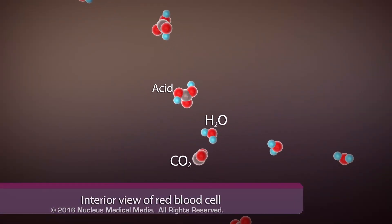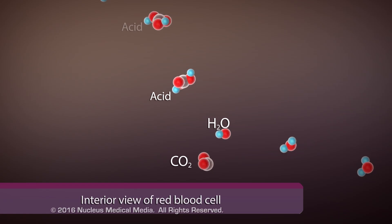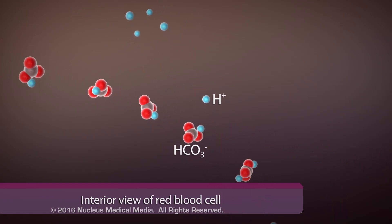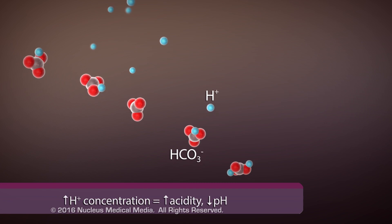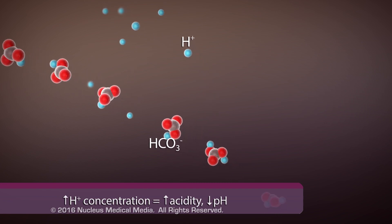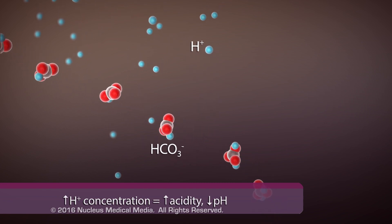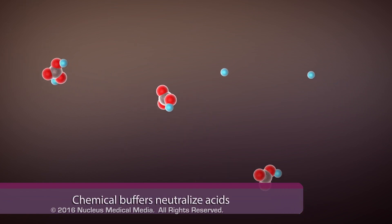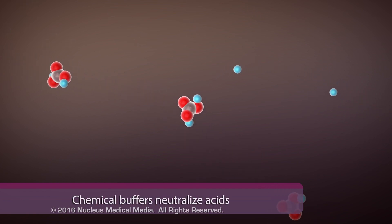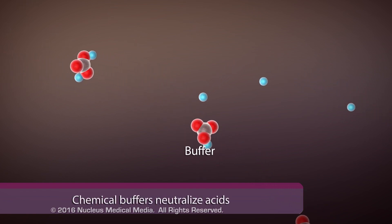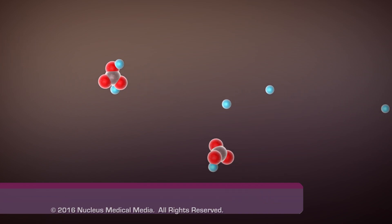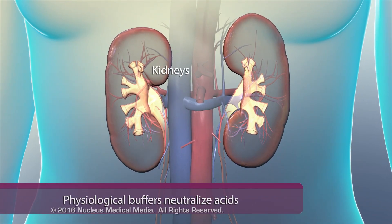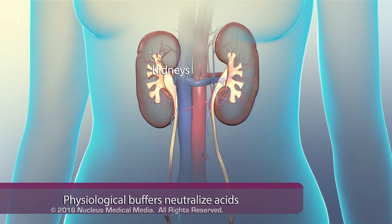Metabolic processes constantly release acids, which freely release hydrogen ions, resulting in increased acidity and lower blood pH. In response, the body can use chemical buffers, such as bases, to neutralize the acids and physiological buffers to facilitate their excretion through the kidney.